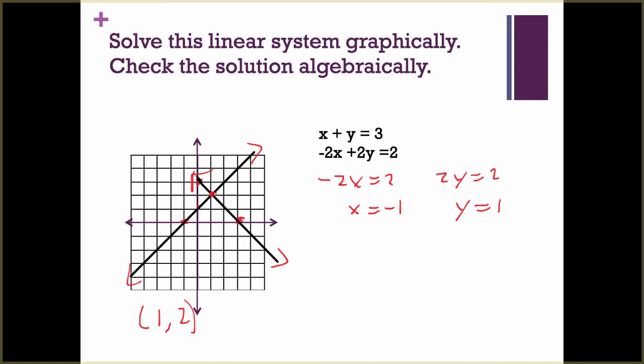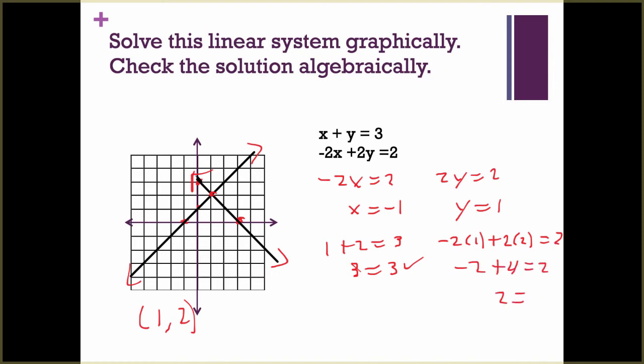We need to check this algebraically. We have x plus y equals 3: does 1 plus 2 equal 3? Yes, it does. We plug into the next equation: negative 2 times 1 plus 2 times 2 equals 2. Does negative 2 plus 4 equal 2? Yes, 2 equals 2. So we've done the check. Again, when I ask for a check, I want to see that whole process — you plug it in and get numbers equal to the same number. This is solving graphically and then checking the solution algebraically.